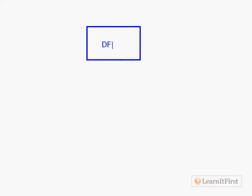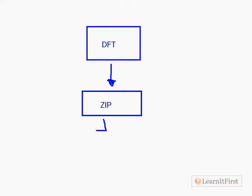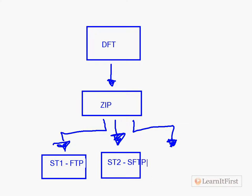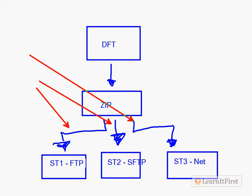One option would be a data flow task to do the export of a text file, then an execute process task to zip it up. Then depending on what happened, I could have script task one to do regular FTP, script task two to do SFTP, and a third script task for network. These would all use expression constraints saying, depending on the value of that variable, this is the one to load. That works.